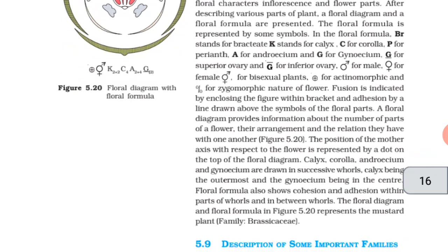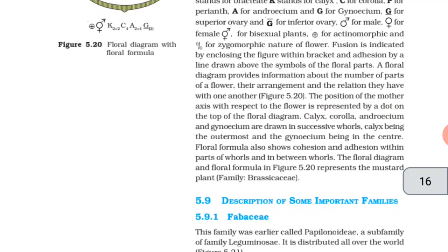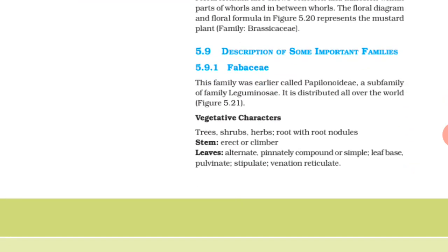A floral diagram provides information about the number of parts of flower, their arrangements and the relation they have with one another. The position of the mother axis with respect to the flower is represented by a dot on the top of the floral diagram. Calyx, corolla, androecium and gynoecium are drawn in successive whorls. Calyx being the outermost and the gynoecium being in the center. Floral formula also shows cohesion and adhesion within parts of whorls and in between whorls. The floral diagram and floral formula represents the mustard plant family, Brassicaceae. The description of some important families you can see and read in the NCERT.